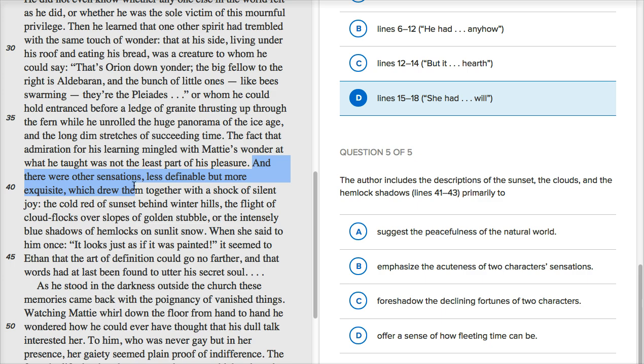But then they're saying, and there were other sensations, less definable, but more exquisite, which drew them together with a shock of silent joy. The cold red of sunset behind the winter hills, the flight of cloud flocks over slopes of golden stubble, or the intensely blue shadows of hemlock on sunlit snow. When she said to him once, it looked just as if it was painted. So, this is just that kind of, that incredible, I mean, I feel it. Maybe I should have hung out with Ethan Frome. But when you're in nature, there's this indescribable feeling of how it just connects with you, the beauty of it all.